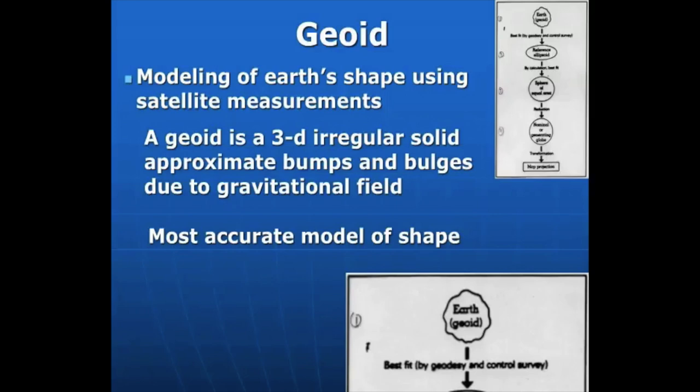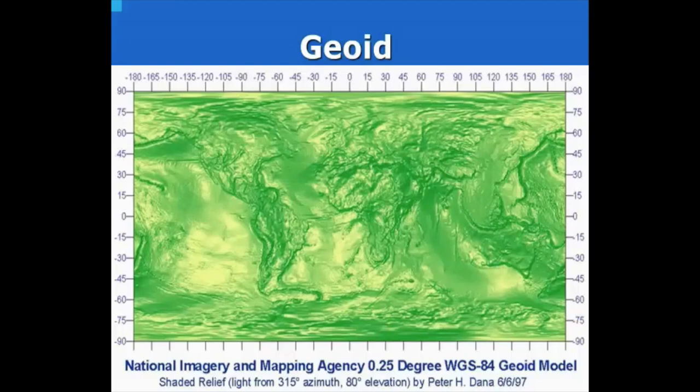So, let's talk about the geoid. I went back to old cartography textbooks. With the geoid, we're modeling the shape of the Earth using satellite measurements, and literally the definition is just a 3D irregular solid. It's approximating bumps and bulges on the surface of the Earth, but it's not so much like this bump is Mount Everest. It's more how the gravitational pull makes the equator big, but it has different kind of bulges on the Earth because of the gravitational field. It's our most accurate model of the shape of the Earth. And here's kind of a rendition of it from the USGS.